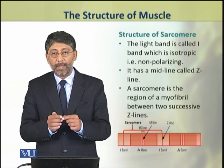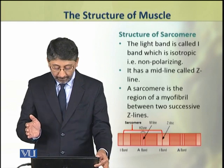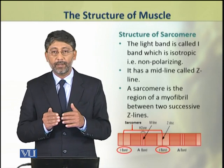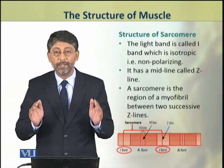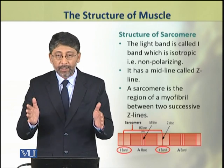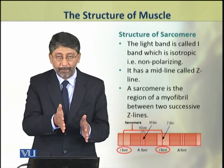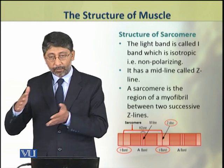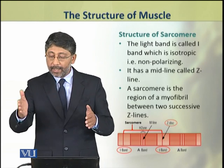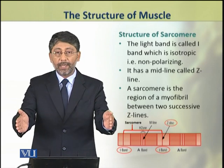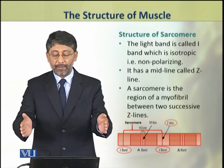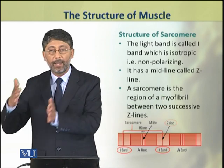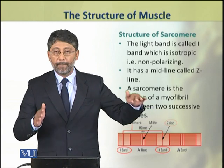Now we shall see what the structure of the light band in the sarcomere is. The light band is called the I-band. This band is isotropic, that is, it is non-polarizing — it does not polarize visible light. In this light band, at the center, there is a mid-line which is called the Z-line. One sarcomere is attached to the next sarcomere through the Z-line, so a sarcomere starts at one Z-line and ends at the next. The portion between two successive Z-lines constitutes one sarcomere, and these sarcomeres attach to one another to form a long myofibril.